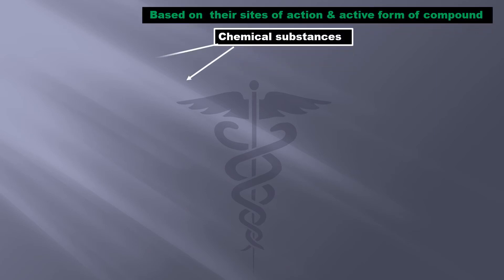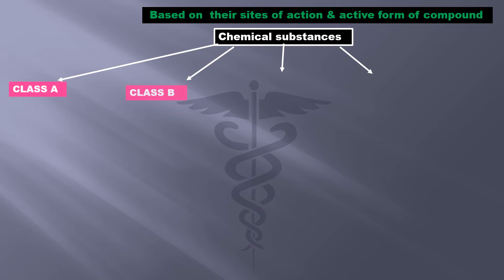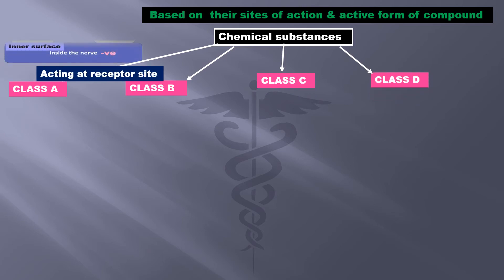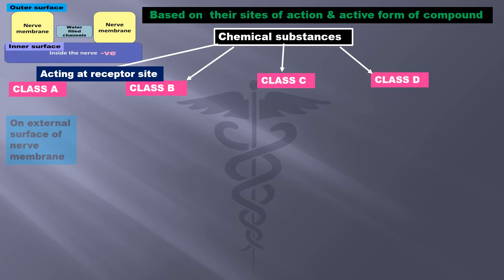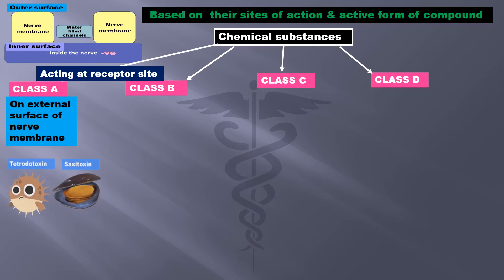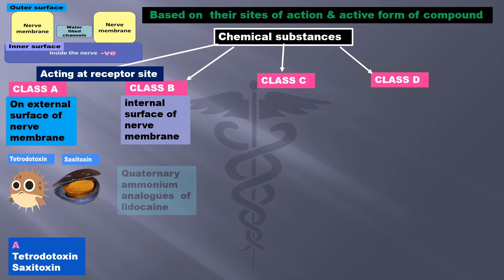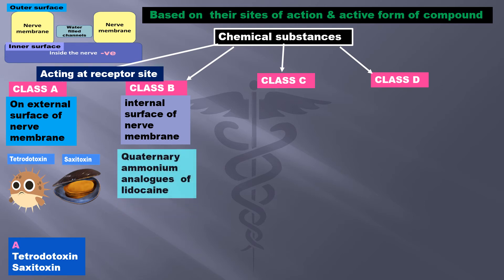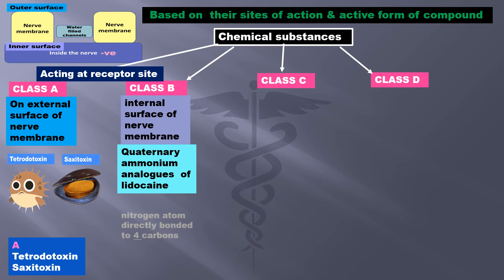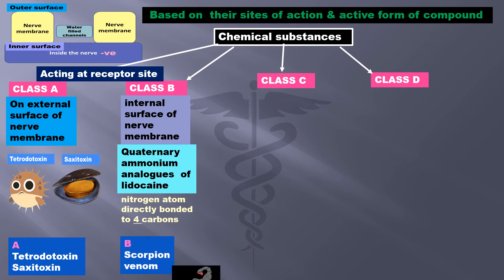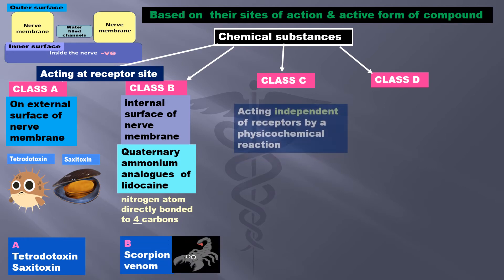Based on the sites of action and active form of the compound, chemical substances are divided into class A, class B, class C, and class D. Both A and B act at the receptor site. Class A chemicals act on the external surface of the nerve membrane — tetrodotoxin and saxitoxin. Class B chemicals act on the internal surface of the nerve membrane; these are the quaternary ammonium analogues of lidocaine, where the nitrogen atom is directly bonded to four carbon atoms. An example is scorpion venom.